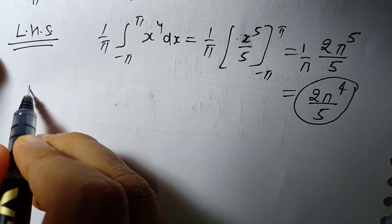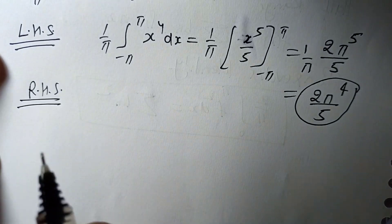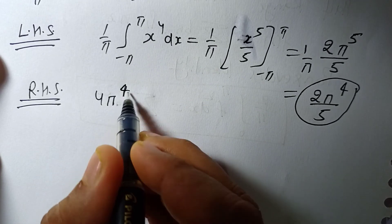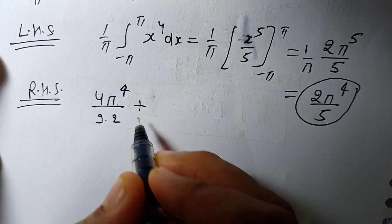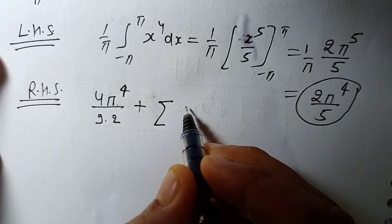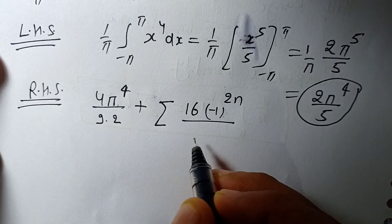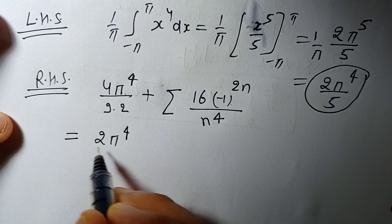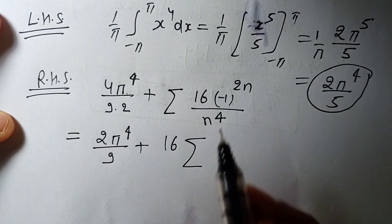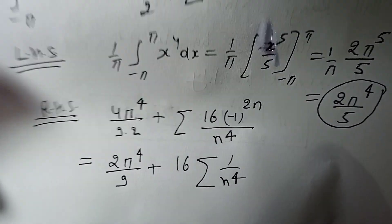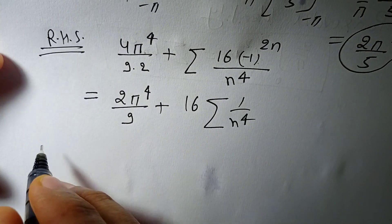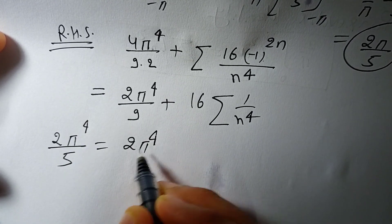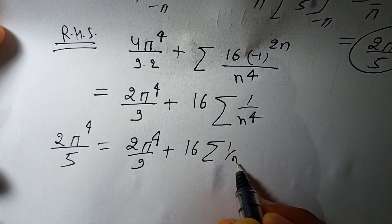For the right-hand side: a₀²/2 = (2π²/3)²/2 = 4π⁴/9 · (1/2) = 2π⁴/9. Plus Σ aₙ²: aₙ = 4(-1)ⁿ/n², so aₙ² = 16·(-1)²ⁿ/n⁴ = 16/n⁴. So the right-hand side is 2π⁴/9 + 16·Σ(1/n⁴).